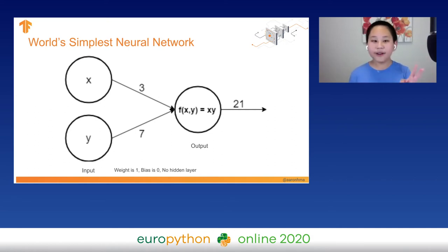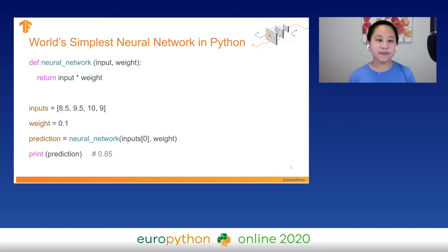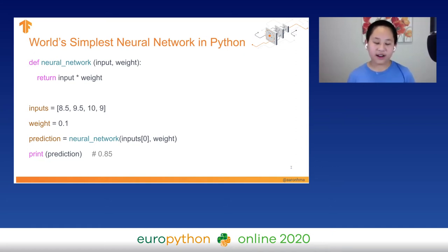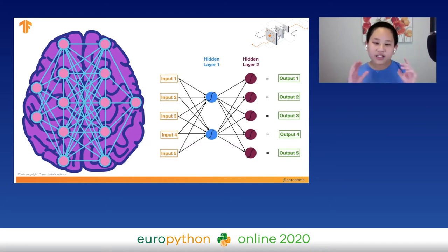Here it is in Python — basically the same thing, except we're multiplying 8.5 by 0.1 to get 0.85. But that's just a simple example. In today's models, there are going to be lots and lots of hidden layers. That's why let's take a deep dive into deep neural networks.